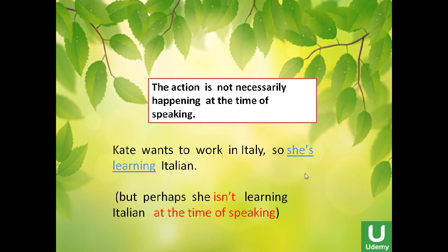The second meaning: the action is not necessarily happening at the time of speaking. For example, Kate wants to work in Italy, so she is learning Italian. Perhaps she is not learning Italian at the exact time of speaking — she can learn today, tomorrow, and so on. Along the way, she is learning Italian. So when you tell your friend, because you are still learning, you would say: Are you learning Italian? Yes, I am learning Italian. Are you learning English? Yes, I am learning English — today, and tomorrow, and so on. This is the meaning.